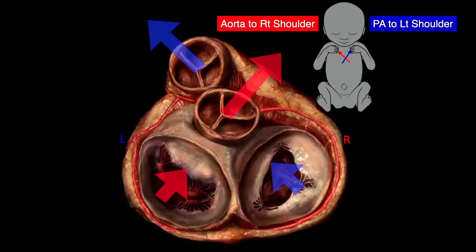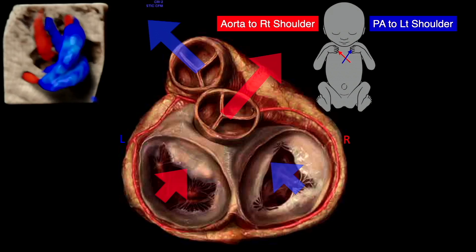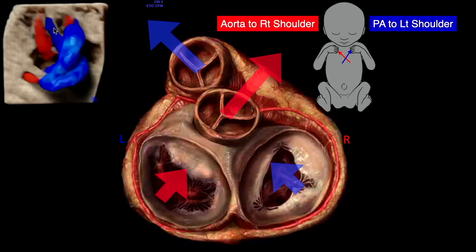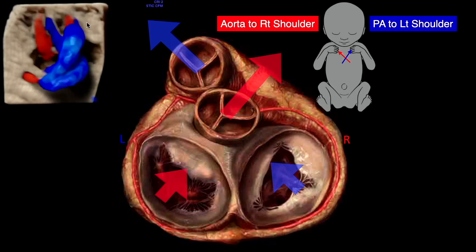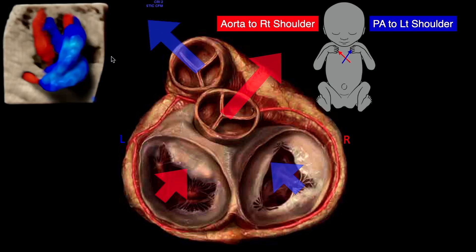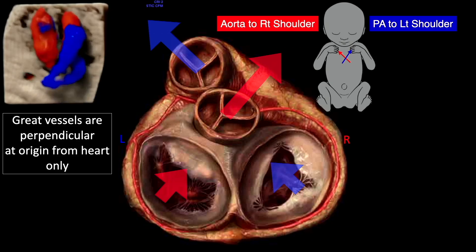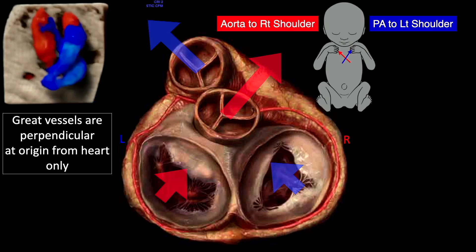That's really important. You see the orientation of the great vessels as they come out of the heart are perpendicular to each other. In this clip, the aorta is posterior to the pulmonary artery and is angling towards the fetal right shoulder. The pulmonary artery is anterior, angling towards the fetal left shoulder. The great vessels are perpendicular to each other at their origin from the heart.